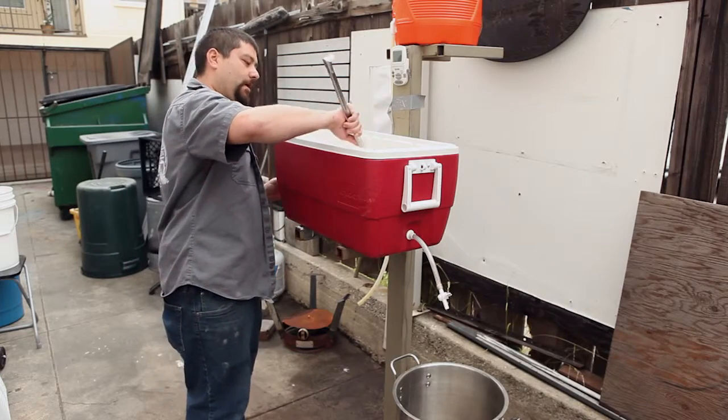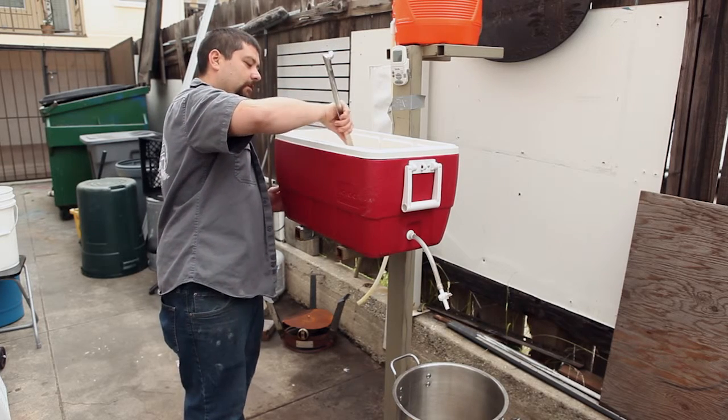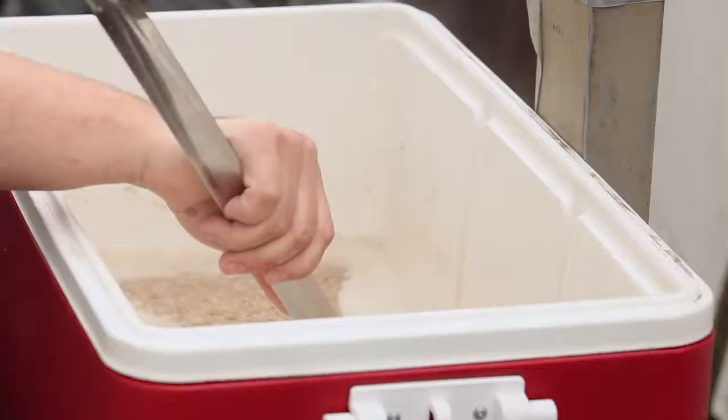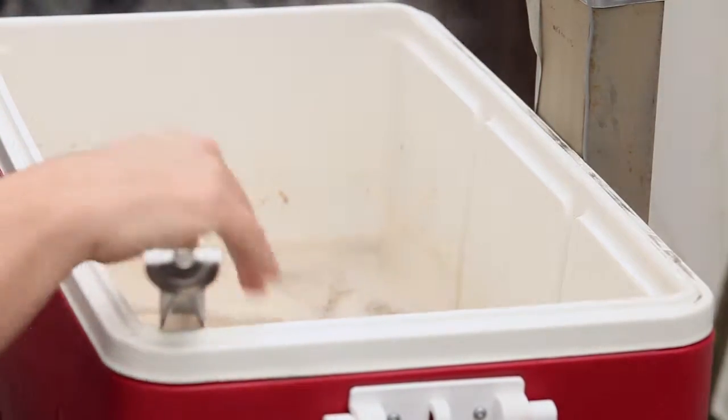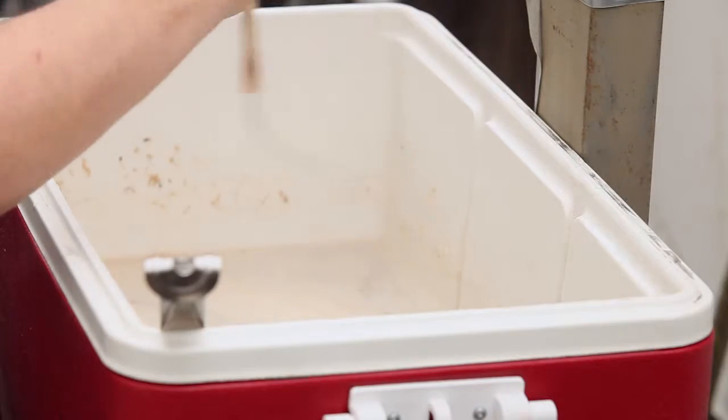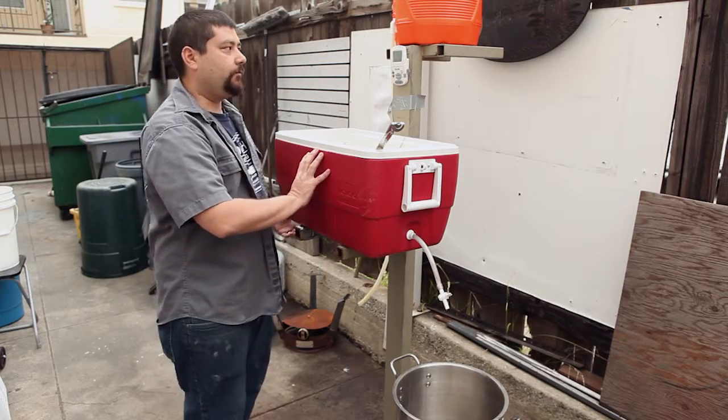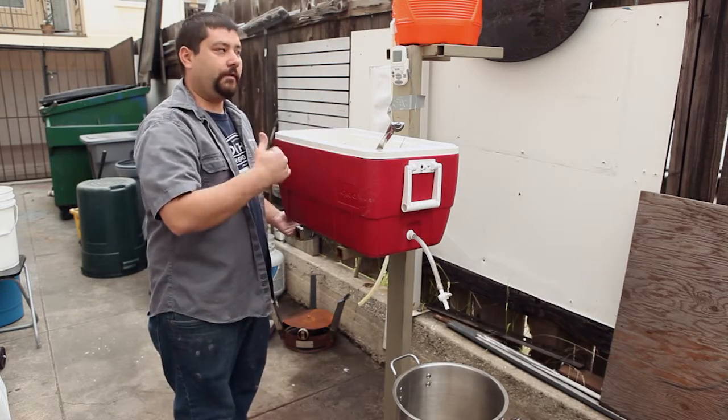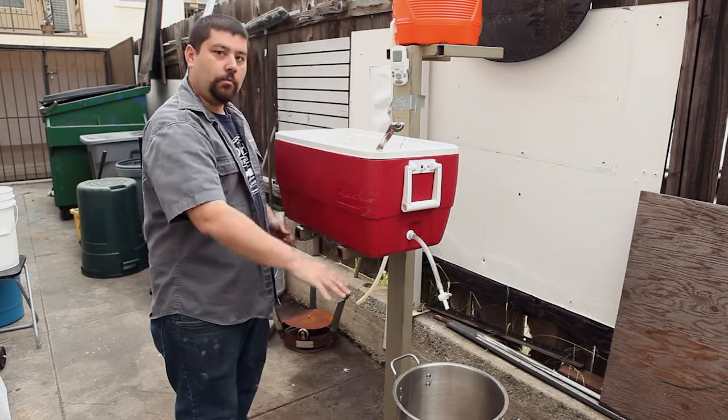Right now we will mash in, we'll stir our grains, make sure it does not clump and keep it a little loose. We'll check the temperatures and make sure it gets down to 152. We'll put the lid on top of our cooler and let it sit for 45 minutes to an hour. Once our temperature is set at 152, we are gonna put the lid on and our next step will just be to sparge and collect our wort.